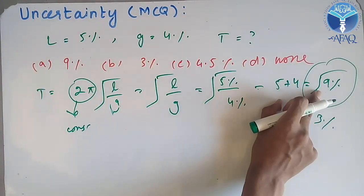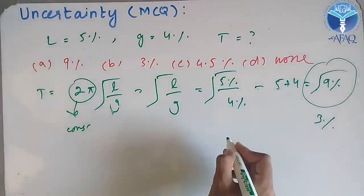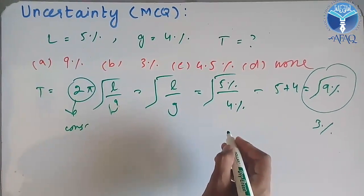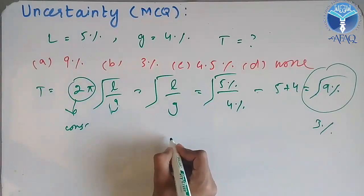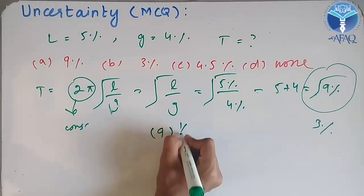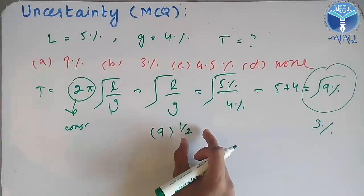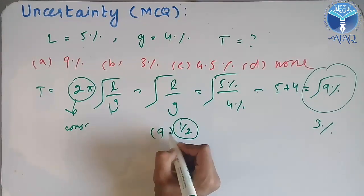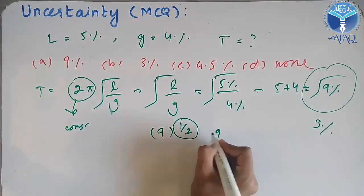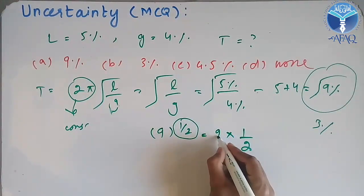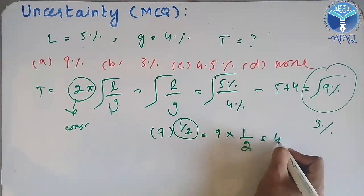You will not take the under root value. Under root value is half, according to the rule of power of quantity. This power you will apply here. We will multiply that power with the percentage uncertainty. So 9 multiplied by half, if I multiply 9 by half, I will get 4.5%. So the correct option here is option C.